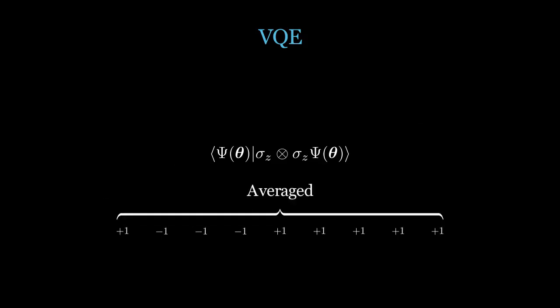Each term in the Pauli string is measured separately over each qubit in the ANSATZ, and the eigenvalues are multiplied together and averaged over many repetitions of this process.